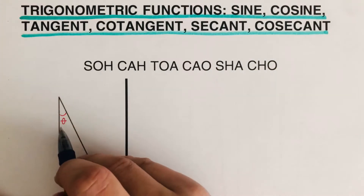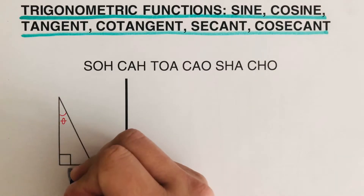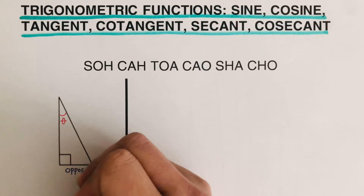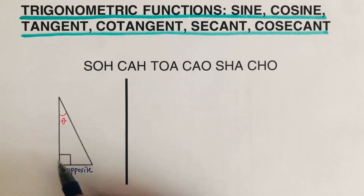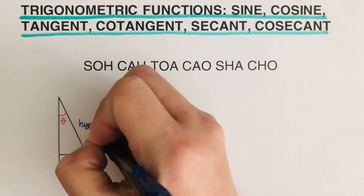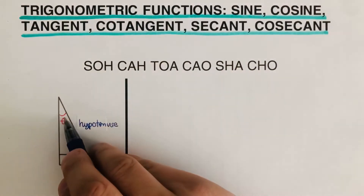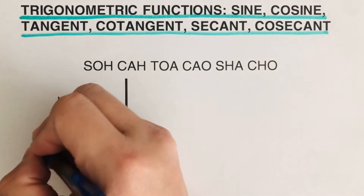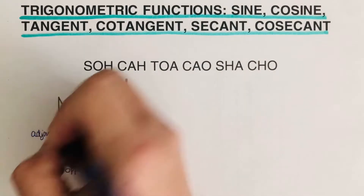We're given this angle theta right here. Anything that is across from the angle is called the opposite, so I can go ahead and label this as the opposite. Anything that is across from the 90-degree angle is the hypotenuse, so I can label this as hypotenuse. And then anything that is next to the angle is the adjacent, so I can label this as the adjacent side.